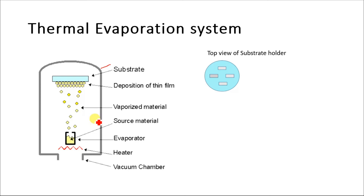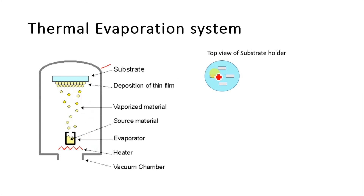The vacuum is created with the help of the vacuum pump. The source material is loaded in the boat and heat is provided with the help of the heater. The material then evaporates and deposits over the substrate. The substrate holder is rotating continuously. The quality of the thin films will depend on the quality of vacuum, the evaporation rate of the source material, and the rotation speed of the substrate holder.